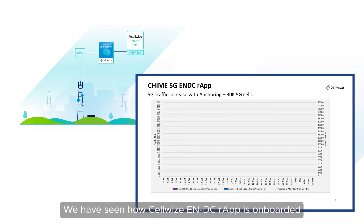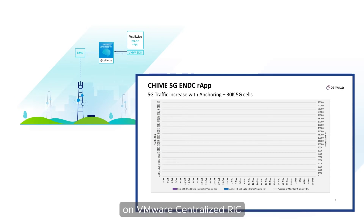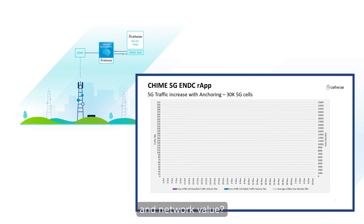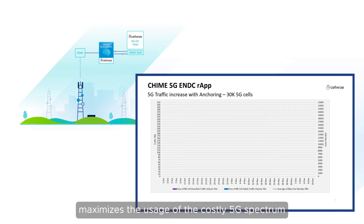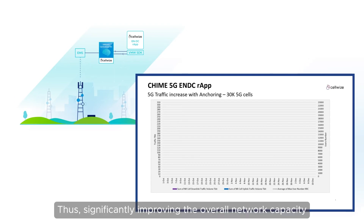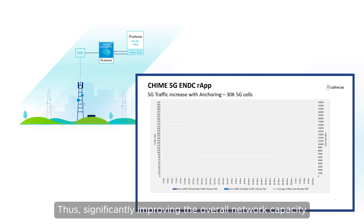We have seen how CellWise ENDC R-App is onboarded on VMware Centralized RIC. But how does this optimization translate into business and network value? The ENDC R-App maximizes the usage of the costly 5G spectrum, offloading the exhausted LTE network and releasing RAN bottlenecks, thus significantly improving overall network capacity.